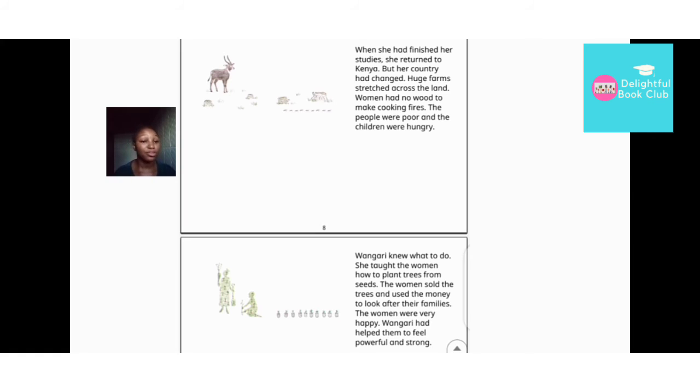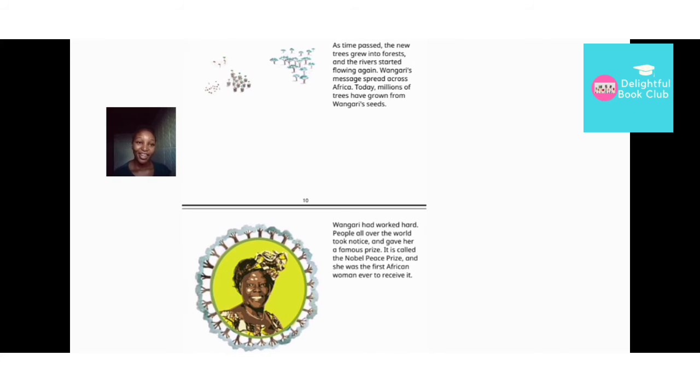Wangari knew what to do. She taught the women how to plant trees from seeds. The women sold the trees and used the money to look after their families. The women were very happy. Wangari had helped them to become powerful and strong.